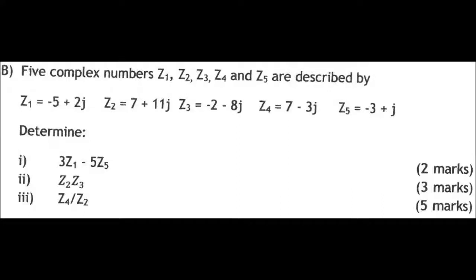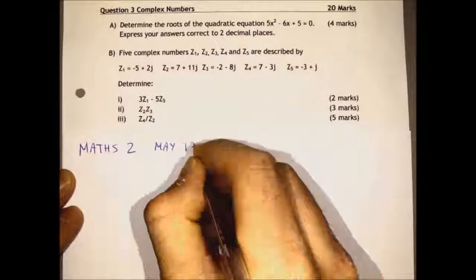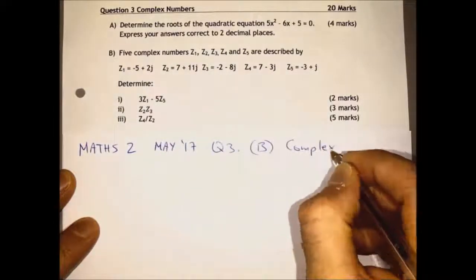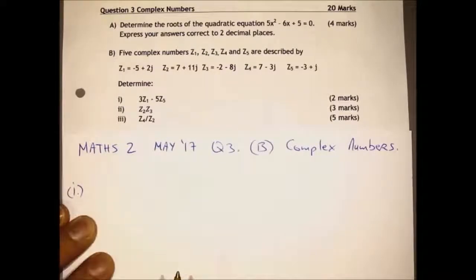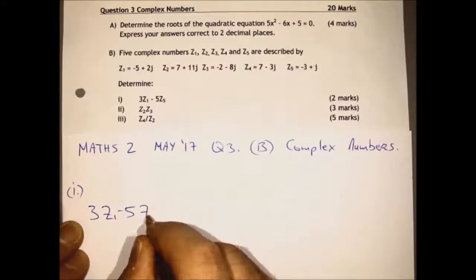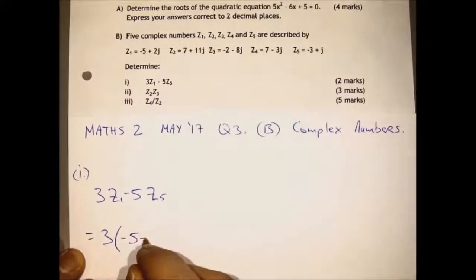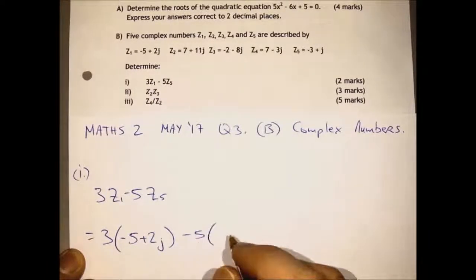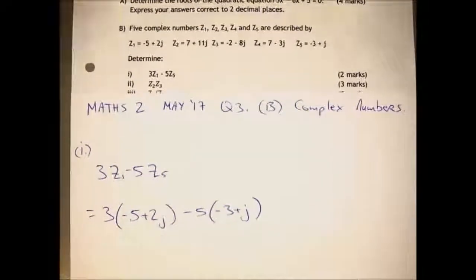Here we are being asked to calculate 3Z1 minus 5Z5. Z1 and Z5 are complex numbers, and we are being asked to get 3 times Z1 and then take away 5 times Z5. We just substitute in the values in the brackets for Z1 and Z5, and multiply out the brackets.